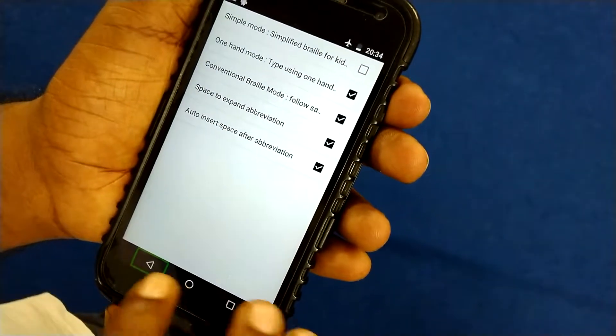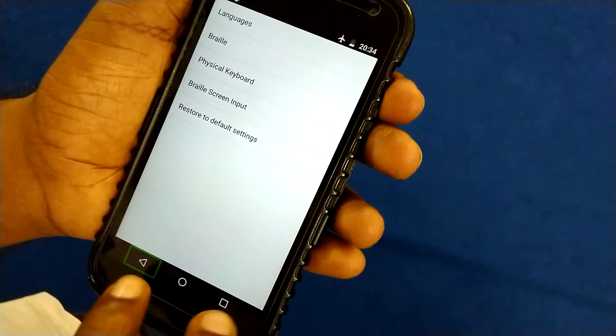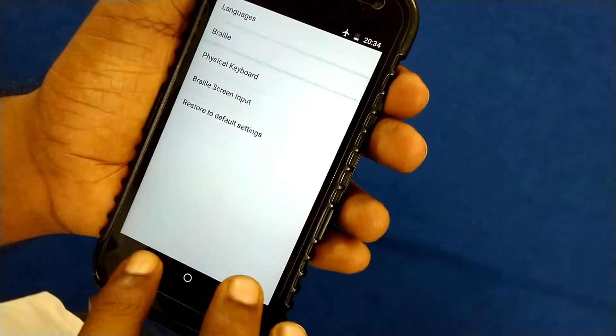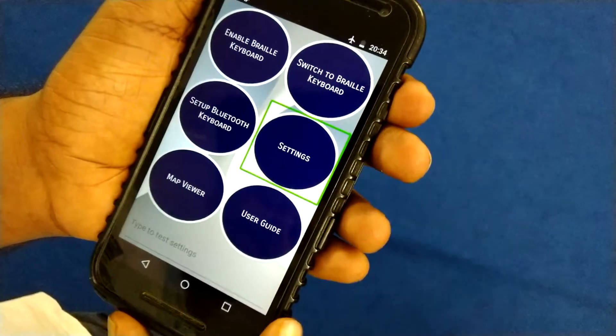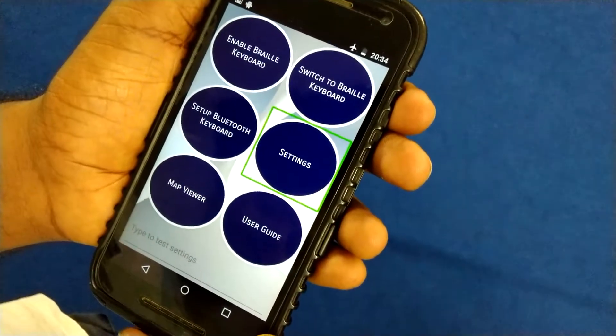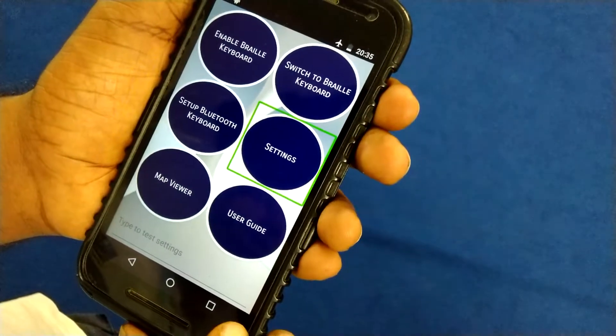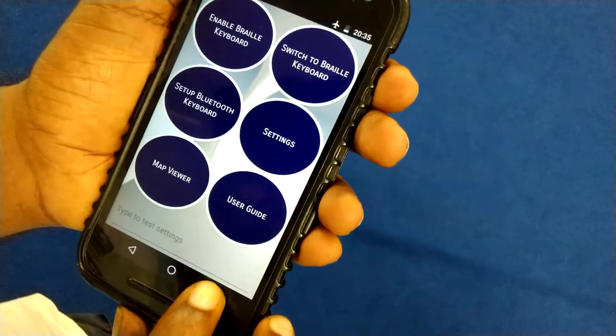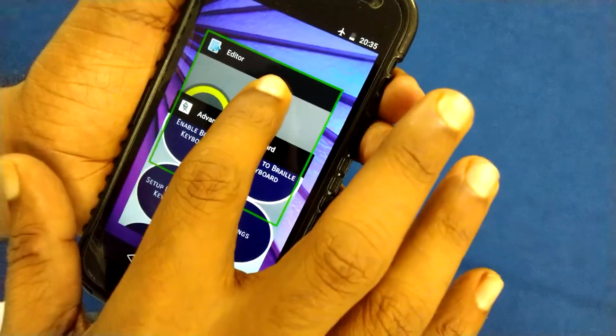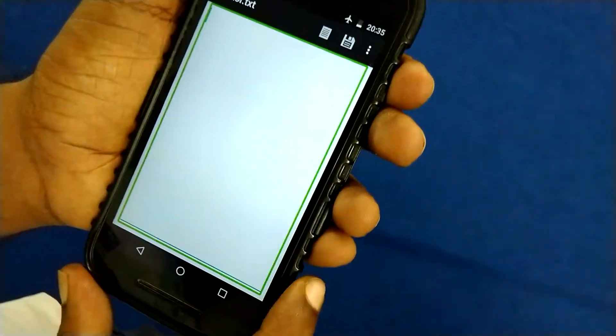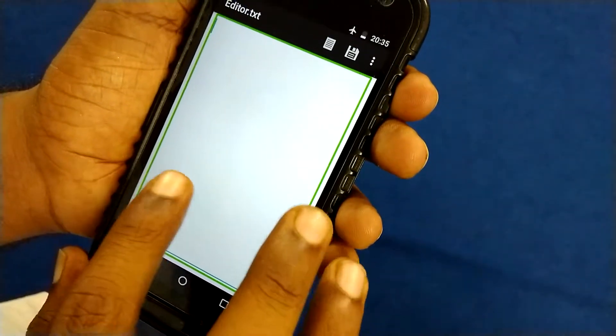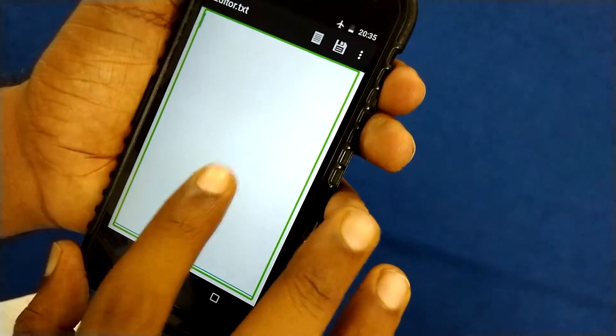Back button. Out of list. Now go back. Settings, braille simple mode. Back setting. Back, Advanced Braille Keyboard, settings button. So now let's try. First of all, I'm going to a text editor. Okay, now double tap on typing area.